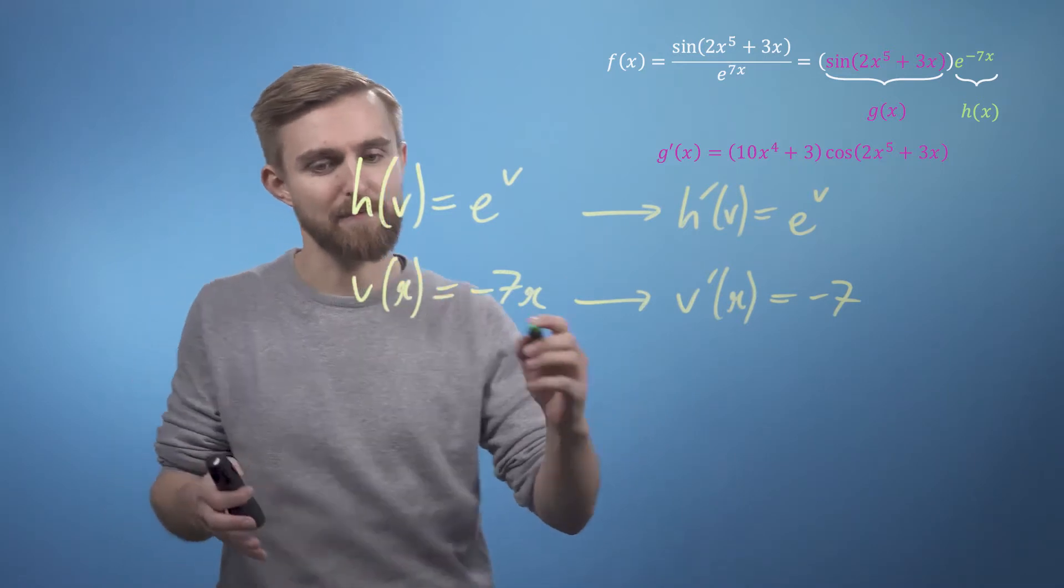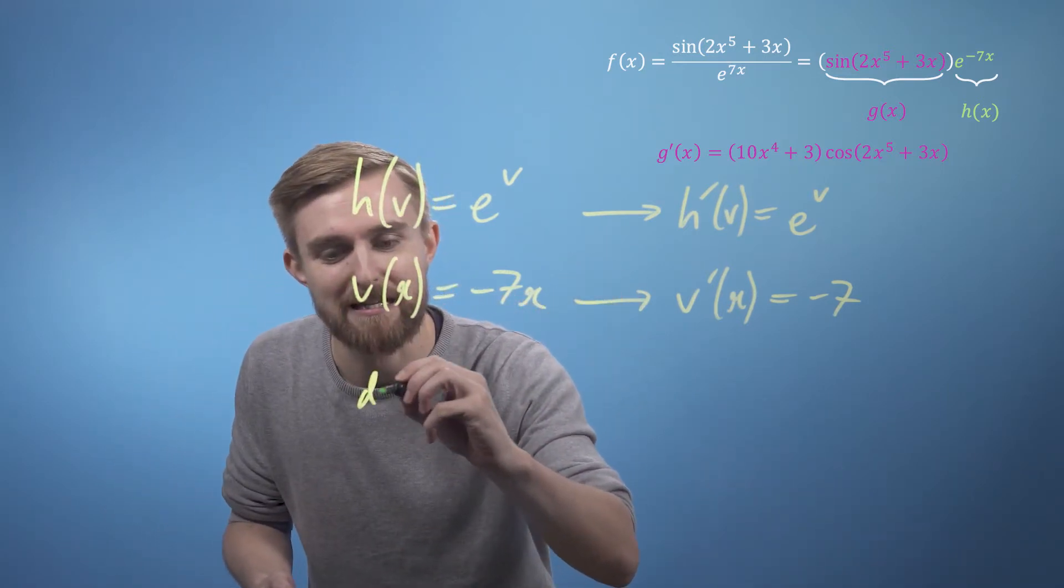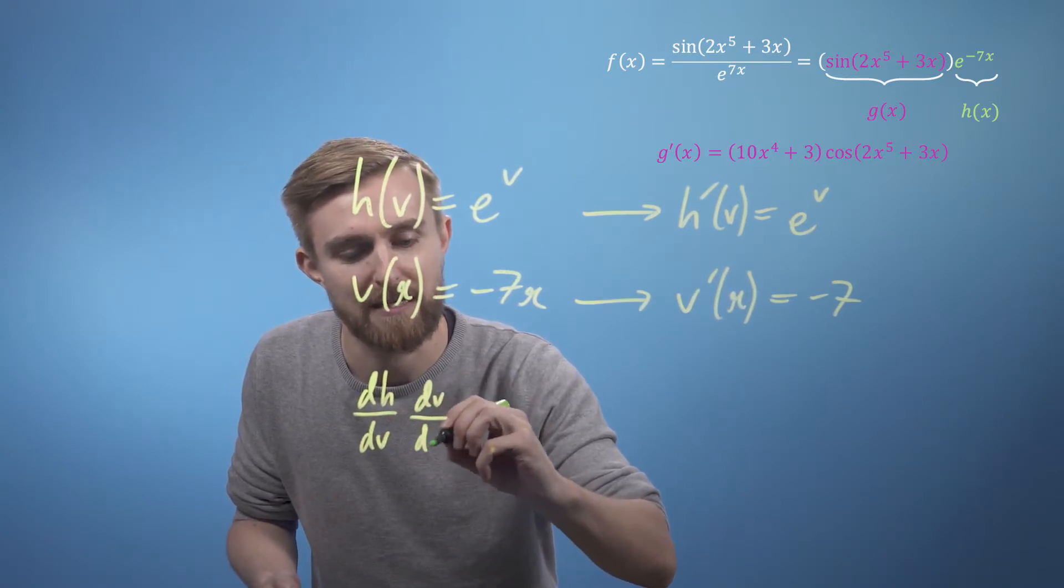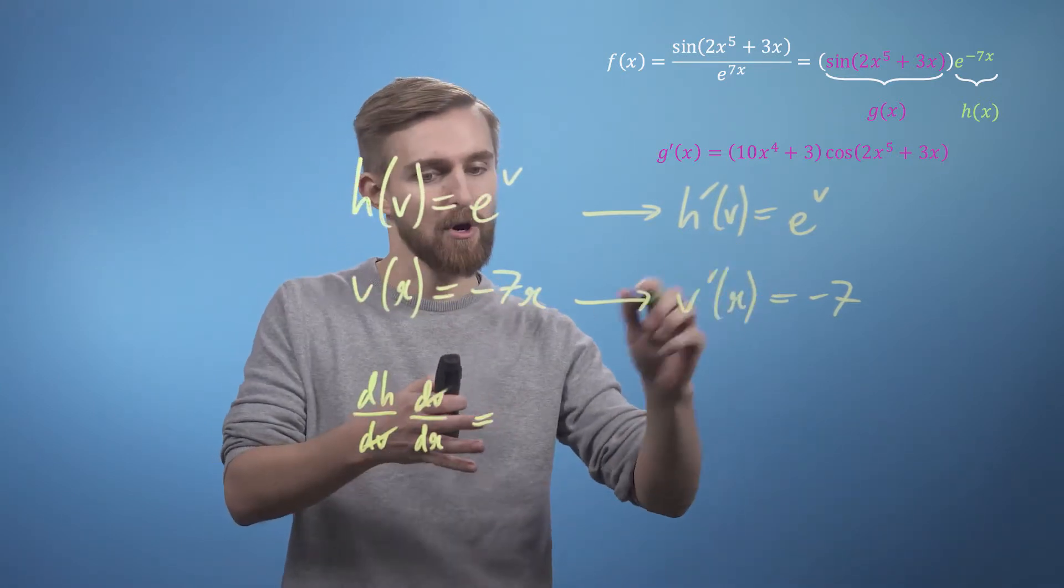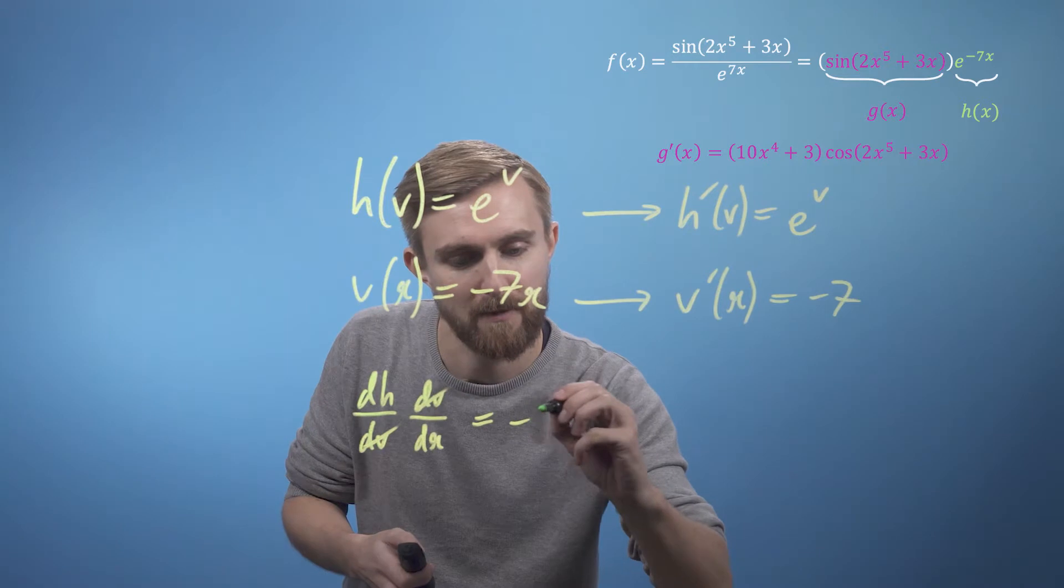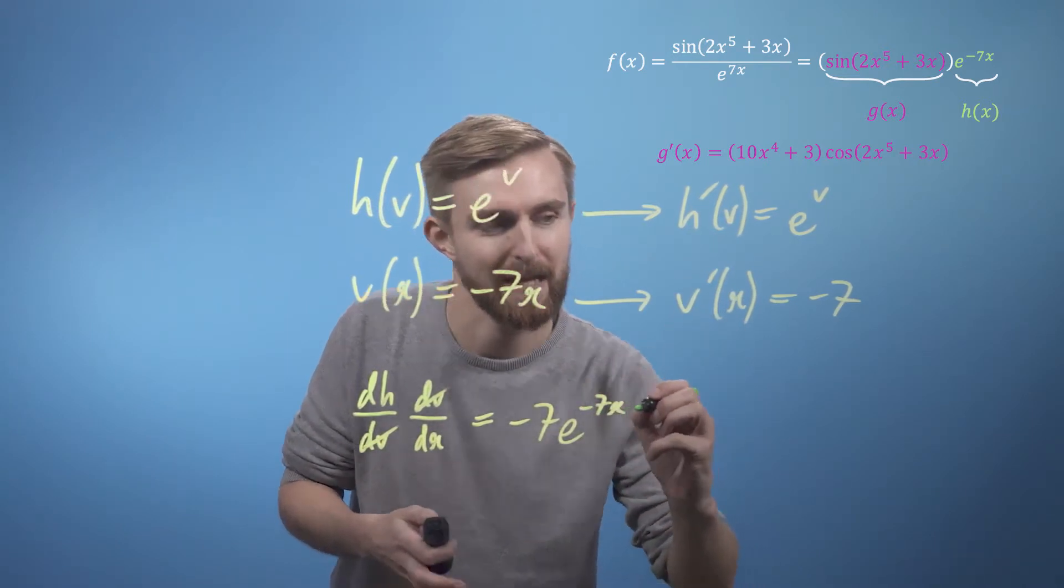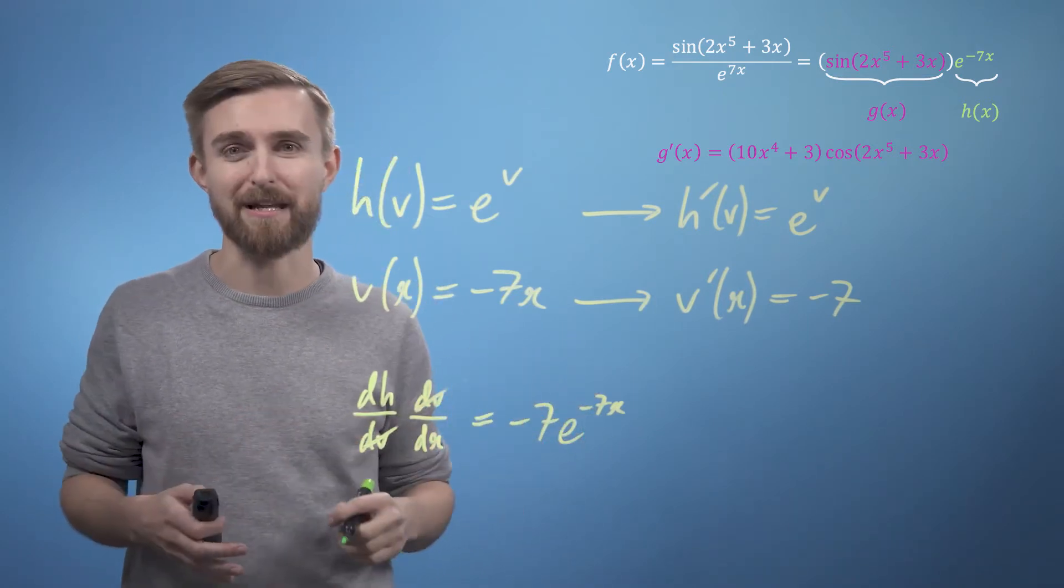So combining these two back together, and using different notation, we can say that dh by dv multiplied by dv by dx is just going to give us minus 7 times e to the minus 7x. And actually already all of our v's have disappeared, so this is already our final expression.